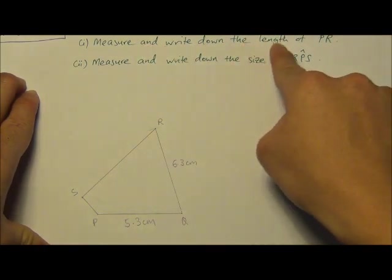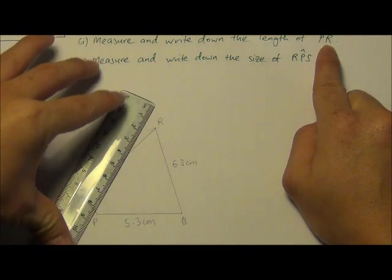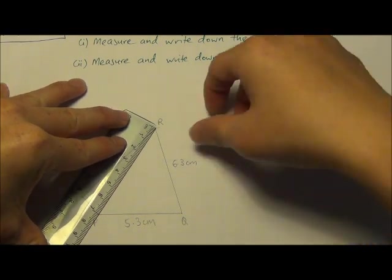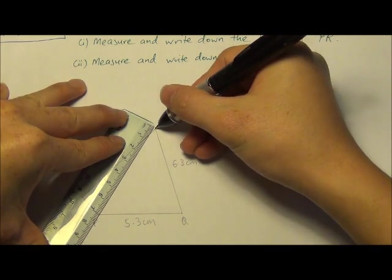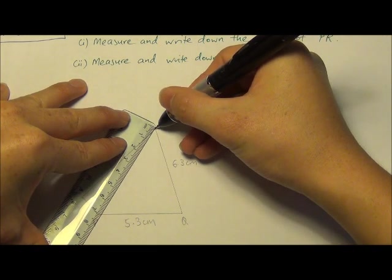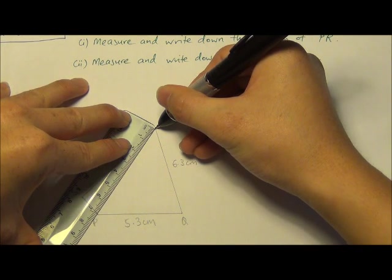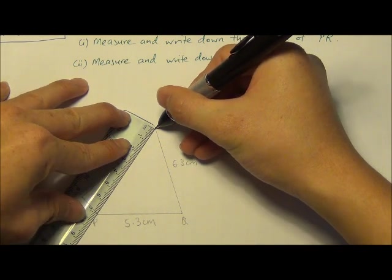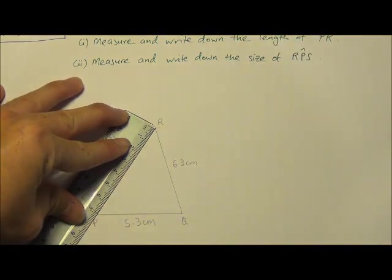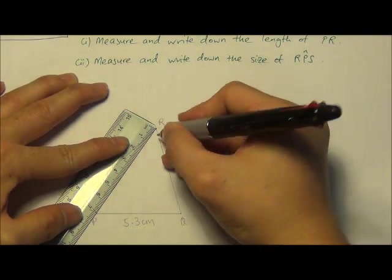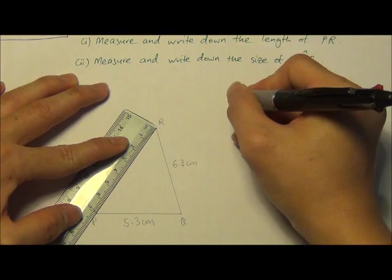Now, measure and write down the length of PR. I'm going to measure it. I always like to use a pencil to mark more of the point, like a pointed end. And I will see that over here I have 7.1 cm. Or alternatively, I can draw a line and mark it off.